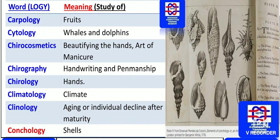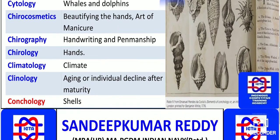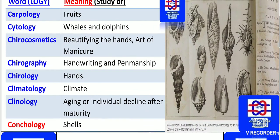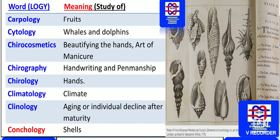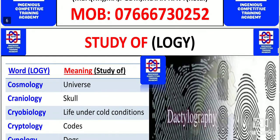The study of climate is known as climatology. The study of aging or individual decline after maturity is known as clinology. The study of shells is known as conchology — as you can see how exactly the study of shells is conchology.